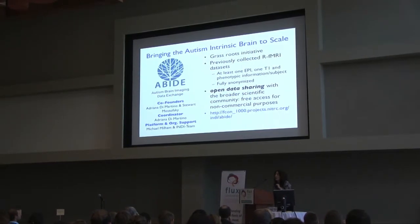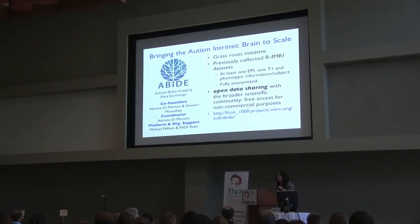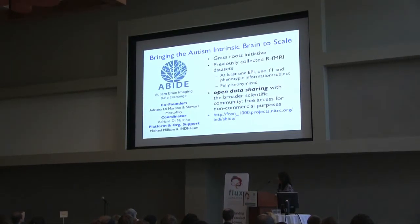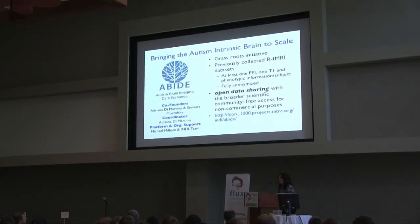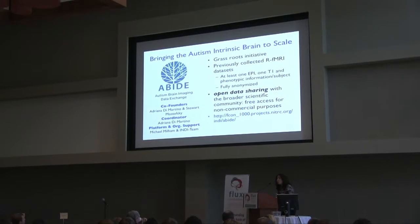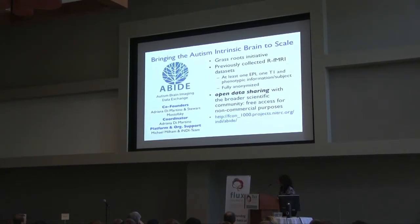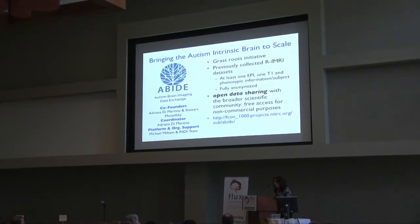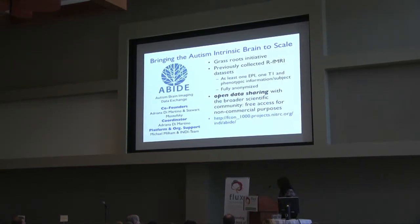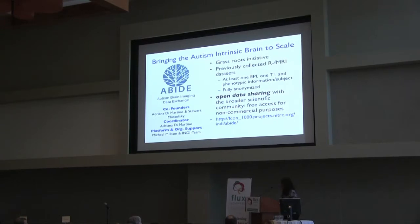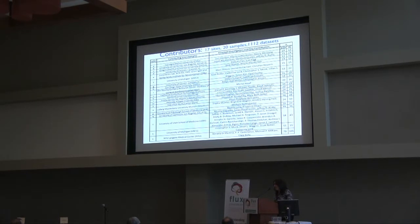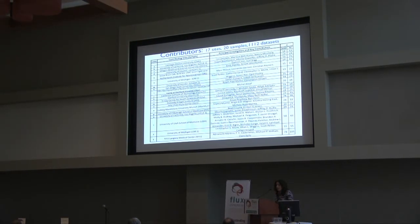ABIDE is a grassroots initiative aimed to aggregate resting state fMRI data and associated structural data and phenotypic information in individuals with autism and controls for the purpose of sharing data openly. As of August 31st, 2012, this dataset was freely available online for non-commercial use, and we were very pleased to put together, in less than a year, a dataset involving 17 sites and 20 independent samples yielding a total of 1,112 individual datasets.